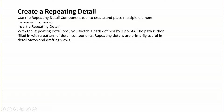Now let's look at Repeating Detail. Use the Repeating Detail Component tool to create and place multiple element instances in a model. With the repeating detail tool you sketch a path defined by two points; the path is then filled in with the pattern of the detail component. For example, if you are inserting a brick section — say 8 by 8 inch clay bricks — and want to repeat it, you can use this repeating detail tool.